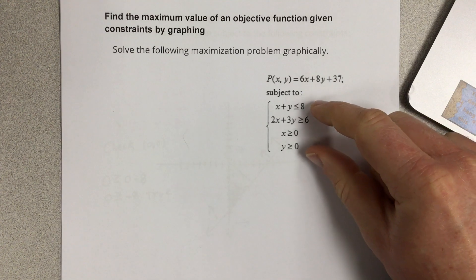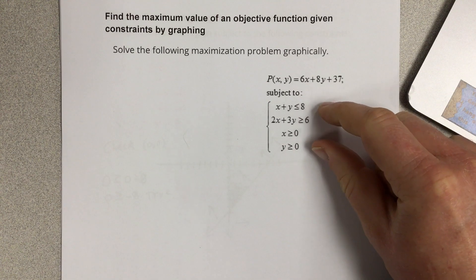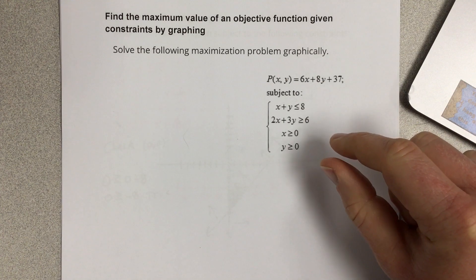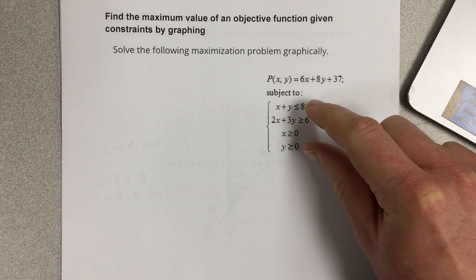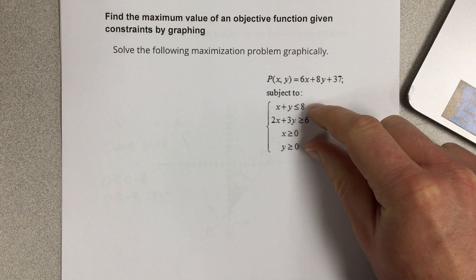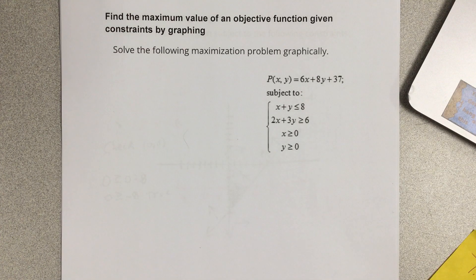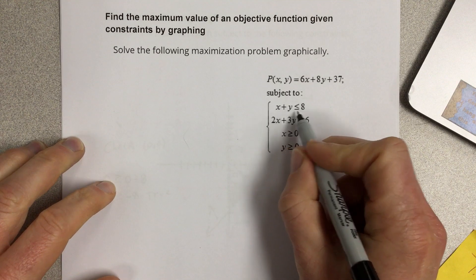So basically, we're going to graph these four inequalities, and then we're going to see which of these points, solutions that are inside this region that we'll get when we graph these. We probably should put these in slope-intercept form first.